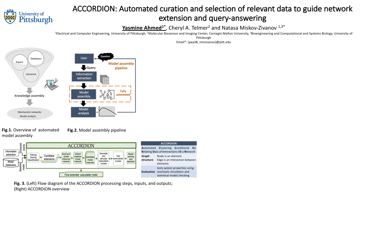We developed Accordion, which is short for Automated Clustering Conditional on Relating Data of Interactions to a Network. This framework is developed to automatically extend models and to enable rapid and comprehensive exploration of the published literature. Specifically, it utilizes published work to collect extensions for existing models, assemble model candidates, and then explore these extensions using stochastic simulations and statistical model checking in order to find the model that best recapitulates the system behavior.